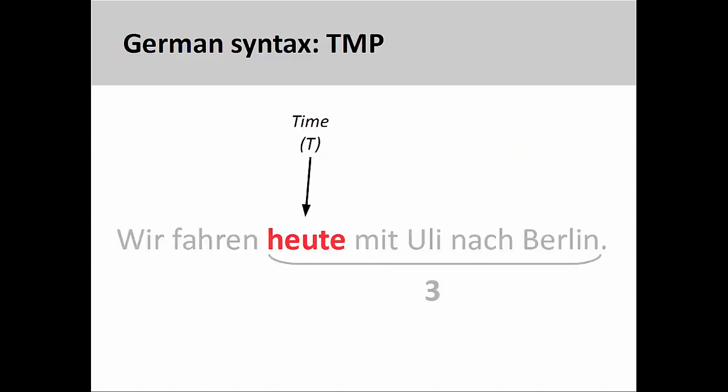In a German sentence, elements in the third position are arranged according to time, manner, and place. This is known as the TMP rule.